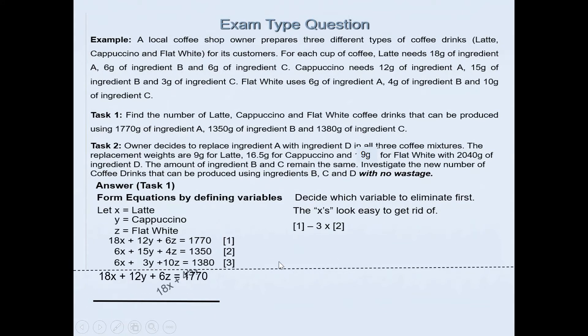I've got the first equation there and the second one after multiplying by 3. So 6 times 3 is 18, 15 times 3 is 45, 4 times 3 is 12, and 1350 times 3 is 4050. If I subtract the two, 12 minus 45y will give me negative 33y, and 6 take away 12 is minus 6z, and 1770 take away 4050 is negative 2280. Please be careful with the negative sign. This becomes our fourth equation.